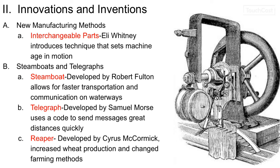The Reaper was developed by Cyrus McCormick — it increases wheat production and changes farming methods. Now you can collect more wheat, which means you can feed more people, and that means populations can increase. Today we have mass populations because everyone can eat. The Reaper moves us into that period. And here you see a picture of the first sewing machine, developed by Isaac Singer and Elias Howe. Obviously you can sew faster with a sewing machine, so people developed clothing in factories with mass-produced clothing. That was the second step — after the textile industry turns yarn into thread, the threads are sewn into clothing.